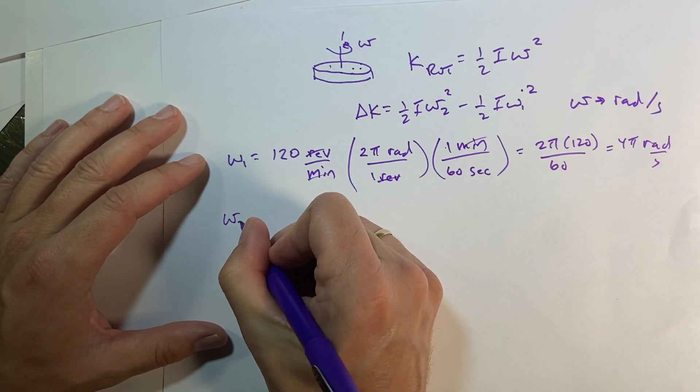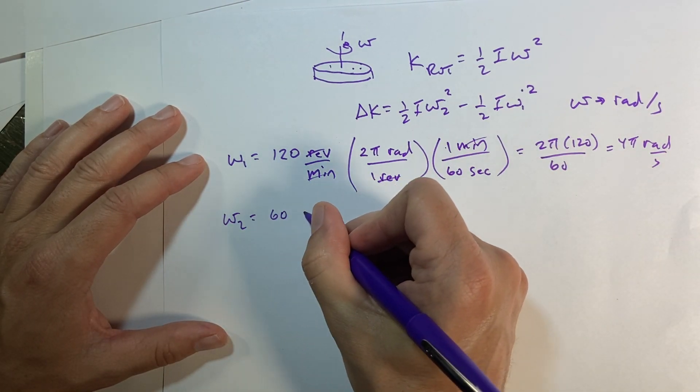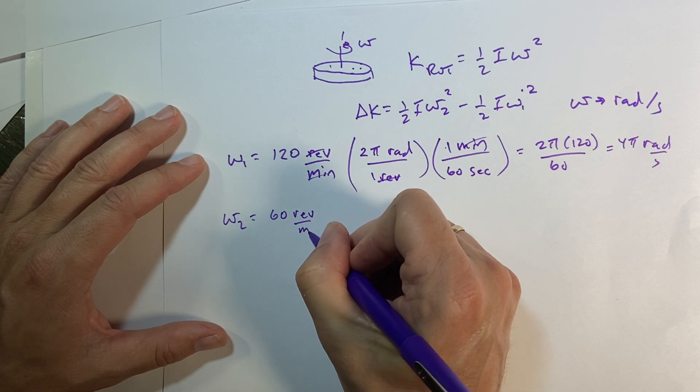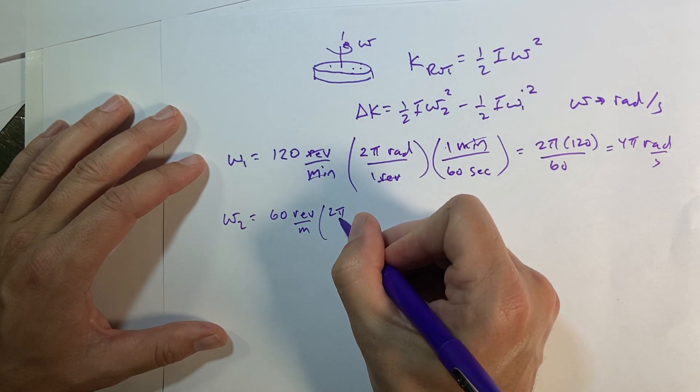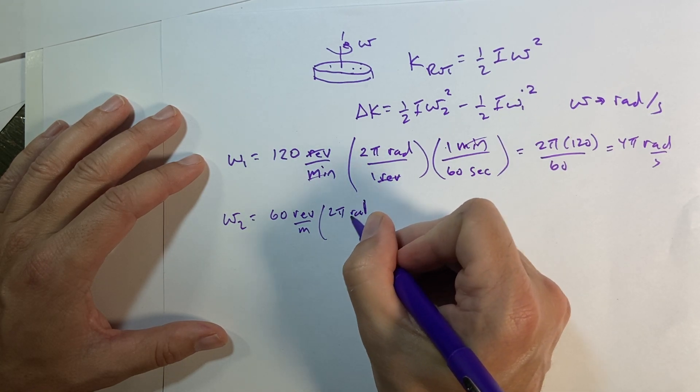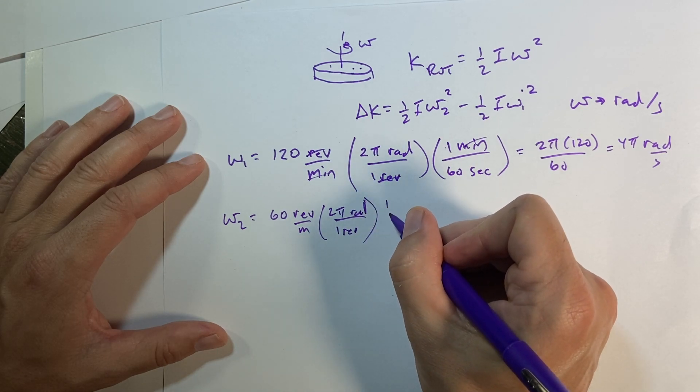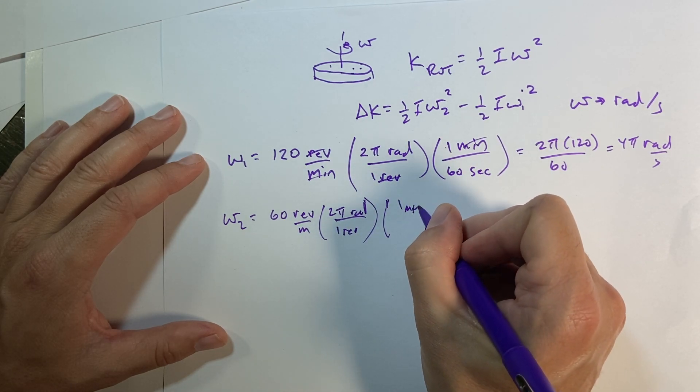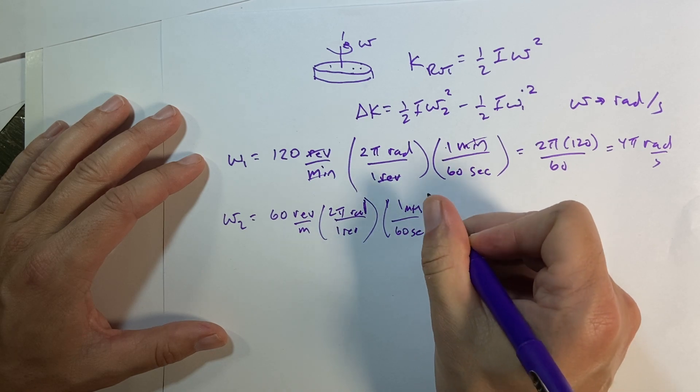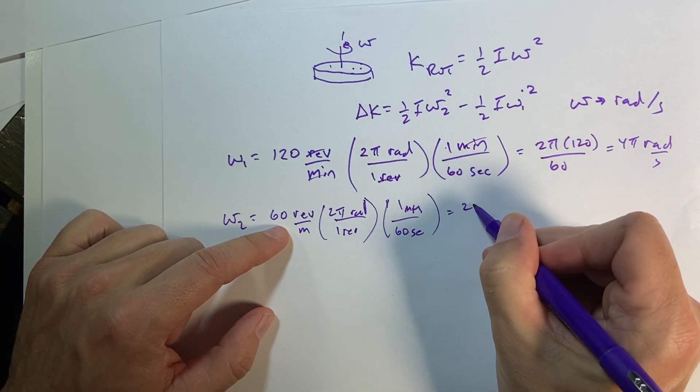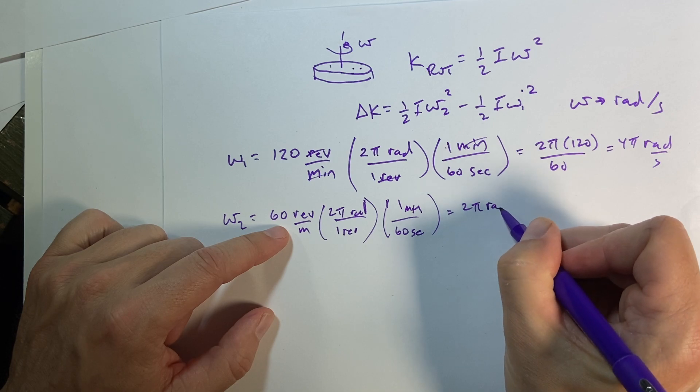And then I can do the same thing for omega-2 as 60 revolutions per minute, multiply by 2 pi radians over 1 revolution, and 1 minute over 60 seconds. In this case, I get 2 pi radians per second.